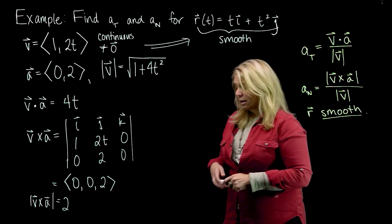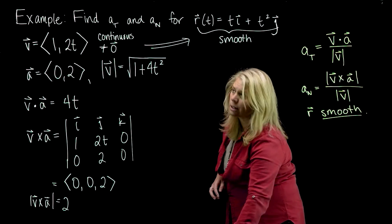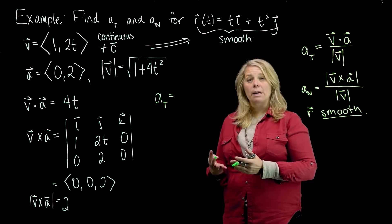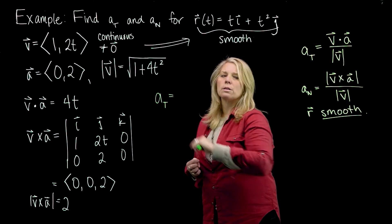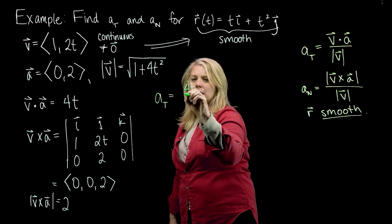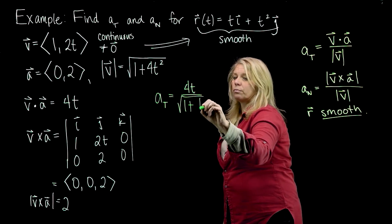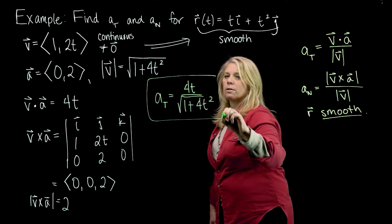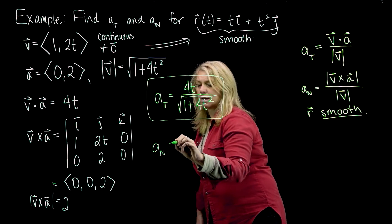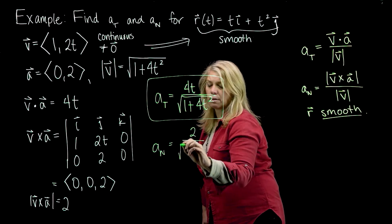I've done all my calculations, so I'm going to write down the tangential and normal components of acceleration using the formulas. The tangential component of acceleration, aT, will be v dot a over the magnitude of the velocity vector, which is 4t over the square root of 1 plus 4t squared. The normal component of acceleration, aN, will be the magnitude of v cross a over the magnitude of the velocity vector, which is 2 over the square root of 1 plus 4t squared.